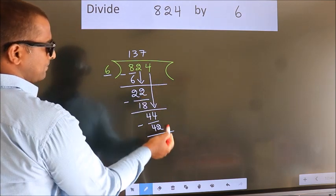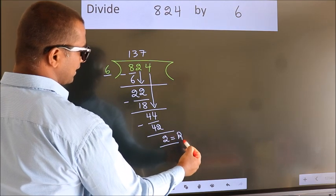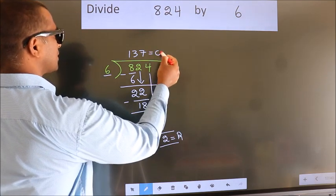No more numbers to bring down, so we stop here. This is our remainder. This is our quotient.